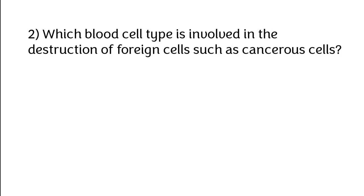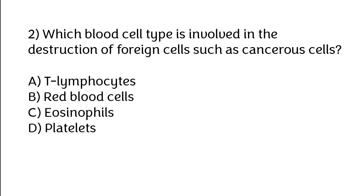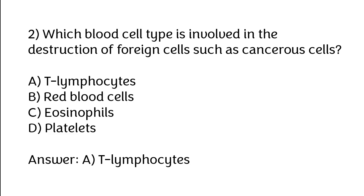Which blood cell type is involved in the destruction of foreign cells such as cancer cells? Options: T lymphocytes, red blood cells, eosinophils, platelets. The correct answer is Option A: T lymphocytes.